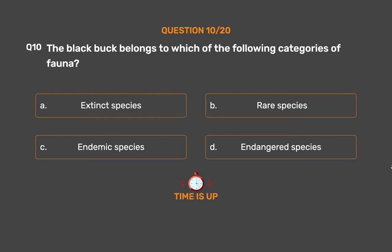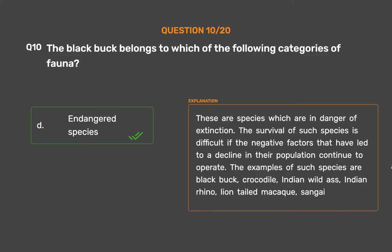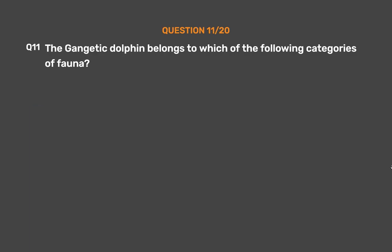The correct answer is Option D: Endangered species. These are species which are in danger of extinction. The survival of such species is difficult if the negative factors that have led to a decline in their population continue to operate. Examples include the black buck, crocodile, Indian wild ass, Indian rhino, lion-tailed macaque, and sangai.